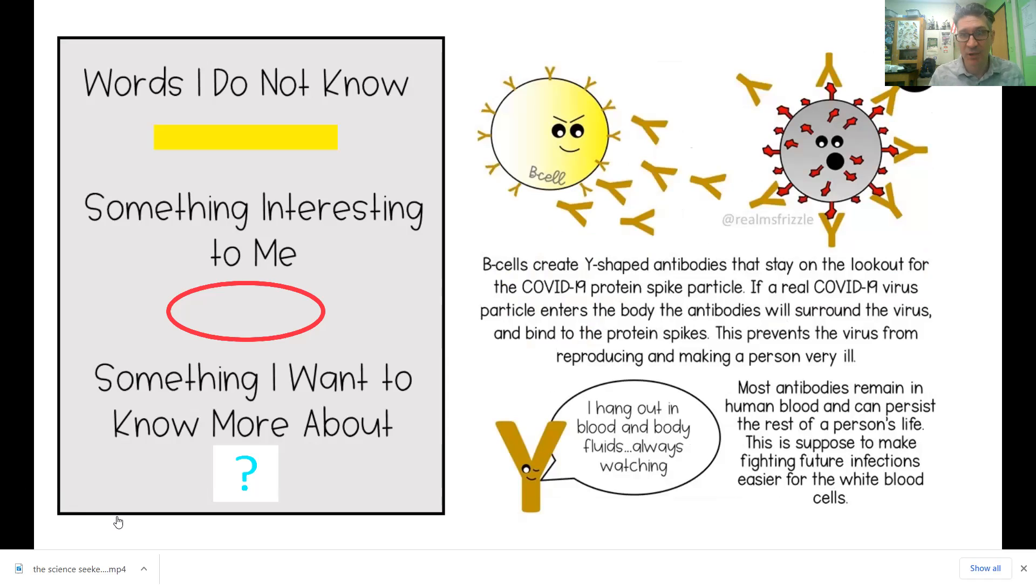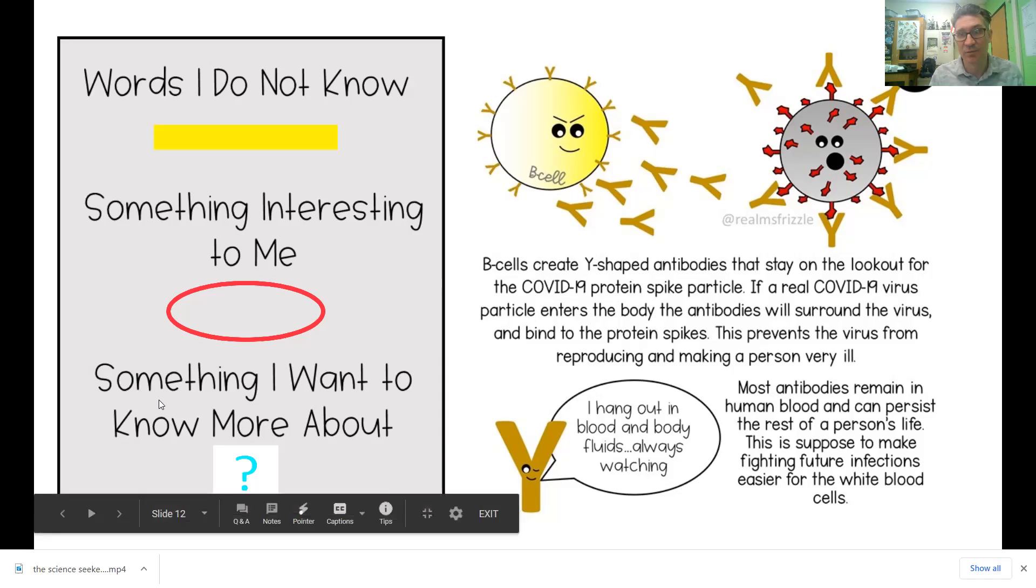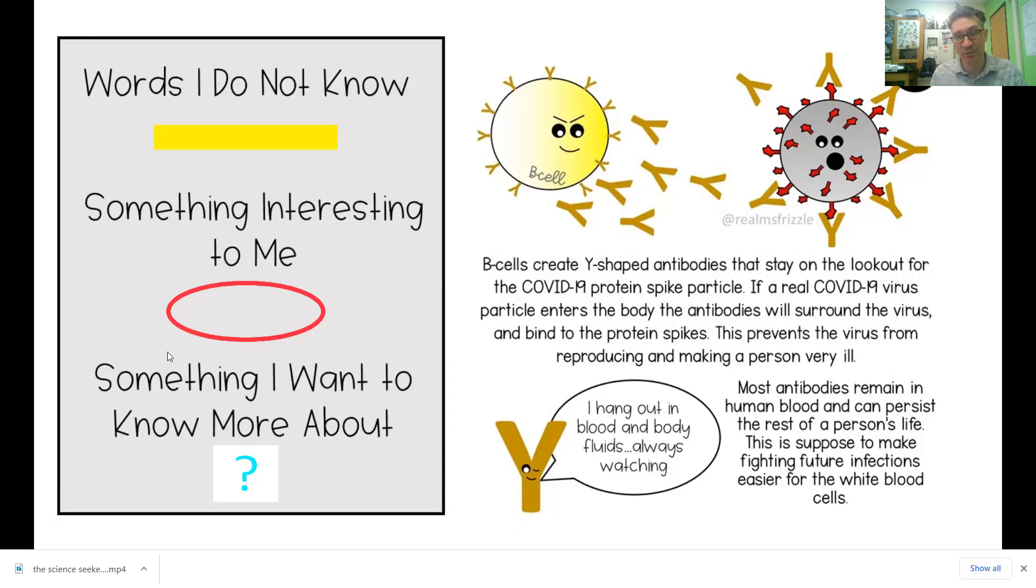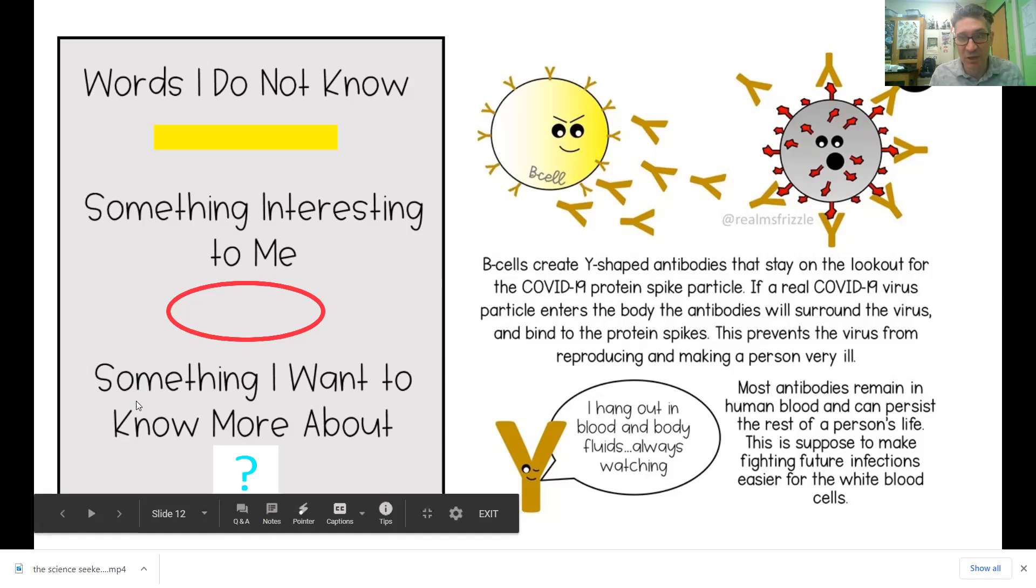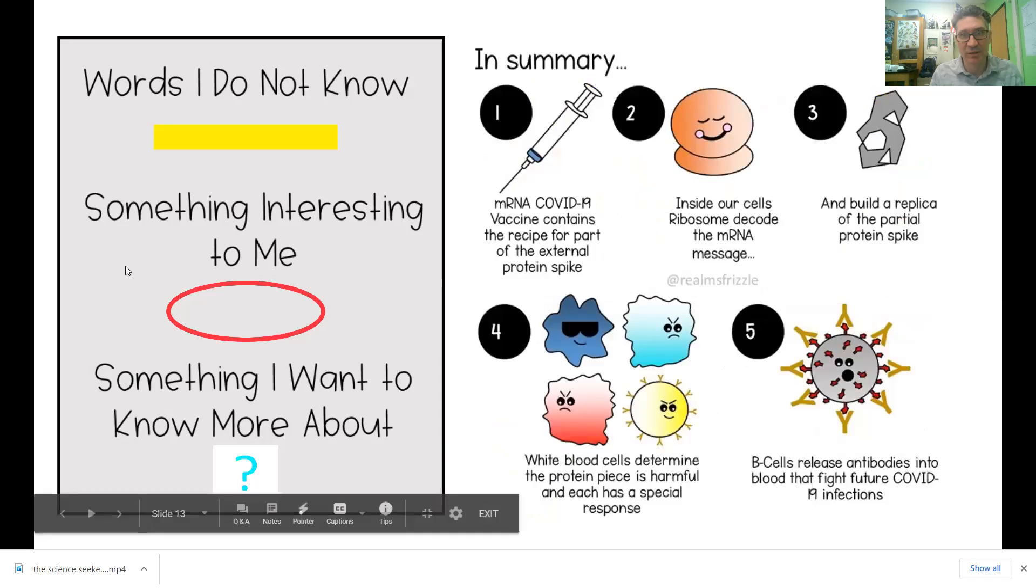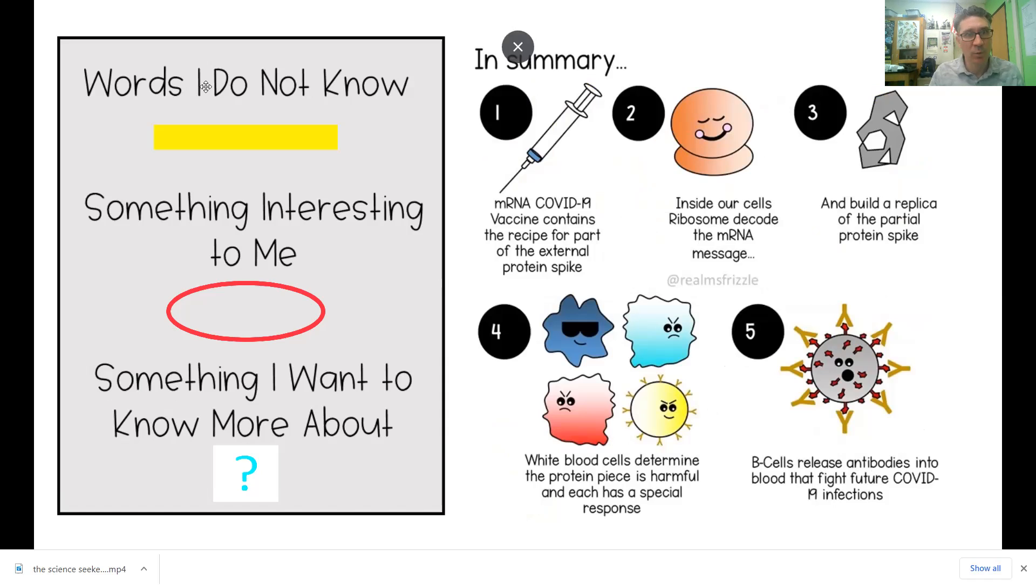Most antibodies remain in the human blood system and can persist for the rest of a person's life. Now, we're not sure about how long the antibodies in our blood work for this one. This is supposed to make fighting future infections easier for the white blood cells. So, in summary, you can see all the different steps here as you look through and watch. And I hope you all have learned a great deal about how vaccines work in science.